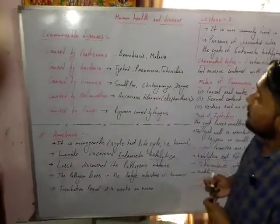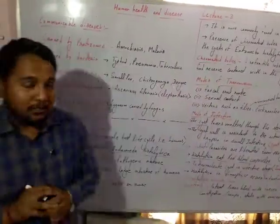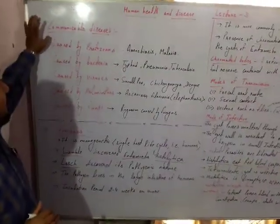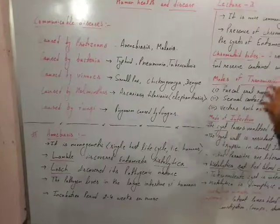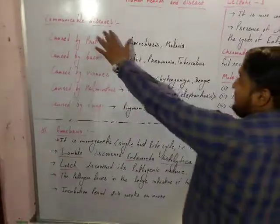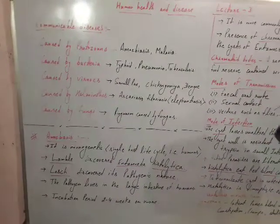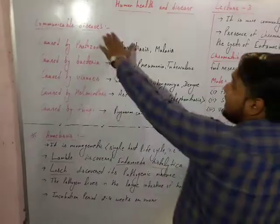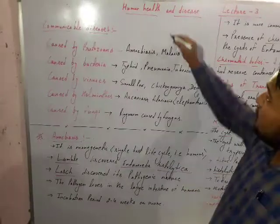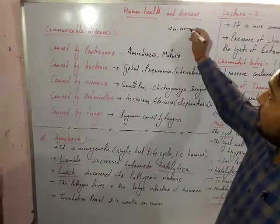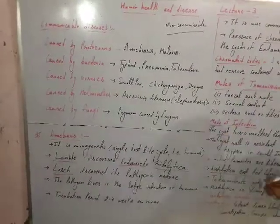Good evening students. In our last topic we discussed indirect transmission, but in this topic we will discuss communicable disease. I, Yoganandar Kumar, will discuss the topic named communicable disease. There are two types of disease: communicable disease, which is that type of disease that spreads from one person to another, and non-communicable disease, which does not transfer from one person to another.